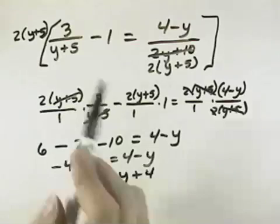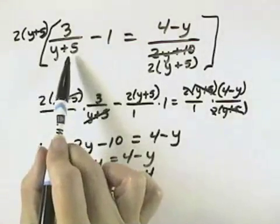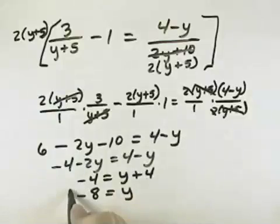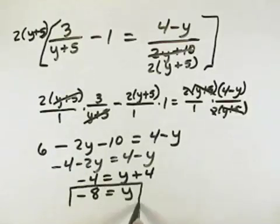And I want to double check and make sure negative 8 plus 5 doesn't equal 0, so it's not an undefined point. Therefore, if it's not an undefined point, then it is the solution. So y equals negative 8 is our solution.